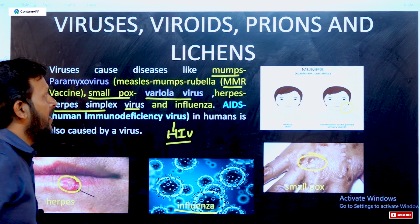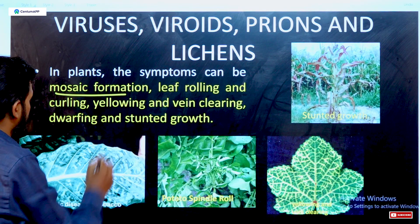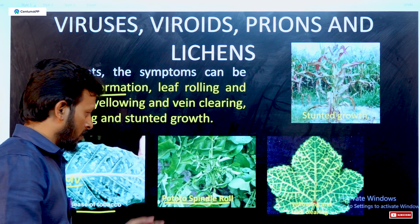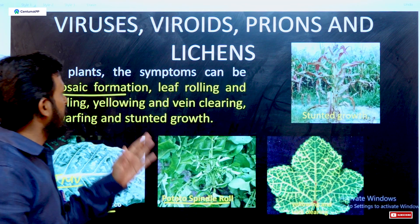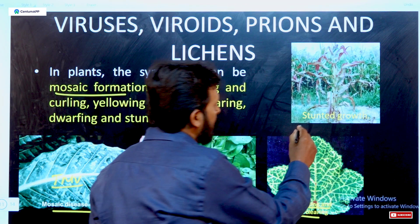In plant viruses, infections include mosaic formations such as Tobacco Mosaic Virus (TMV), leaf rolling such as potato spindle roll caused by viroids, yellow and vein clearing causing yellowish color in leaves, and stunted growth where some plants stop growing.